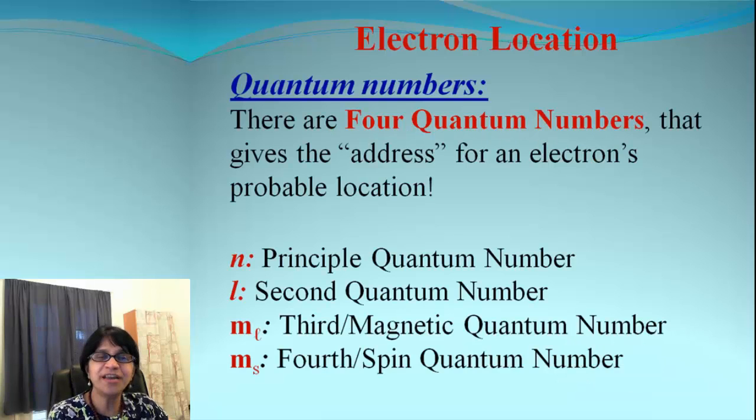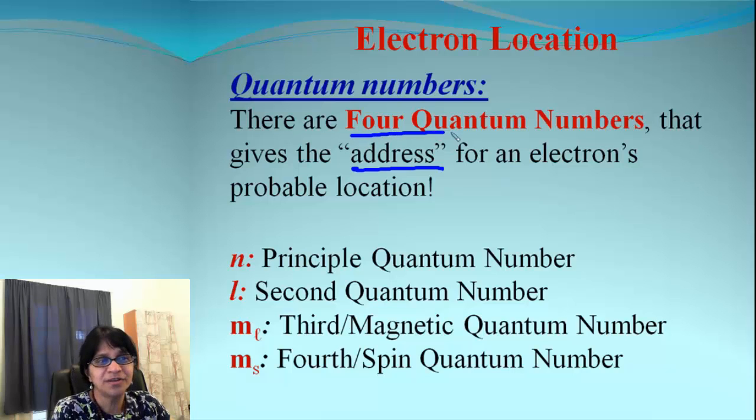First of all, every electron will have a certain location in an atom, just like it has some address there. And that address will be easily found if we know the four quantum numbers. So what are these four quantum numbers?